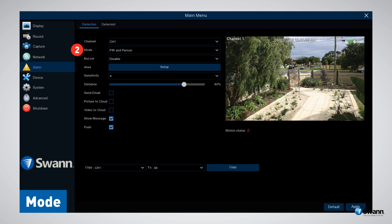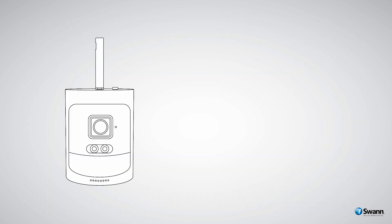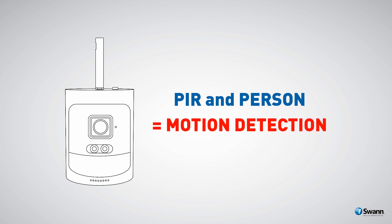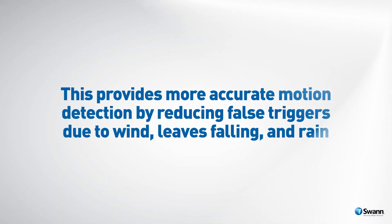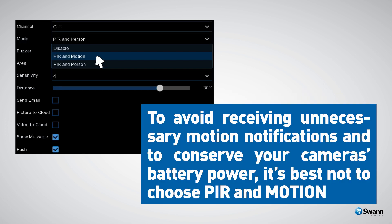Option number two: Mode. This determines how your NVR will detect motion. By default, the PIR and Person setting is selected. Your NVR will record motion only if one or more human-sized objects have been detected by the camera and the camera's built-in PIR sensor. This provides more accurate motion detection by reducing false triggers due to wind, leaves falling, and rain. To avoid receiving unnecessary motion notifications and to conserve your camera's battery power, it's best not to choose PIR and Motion.